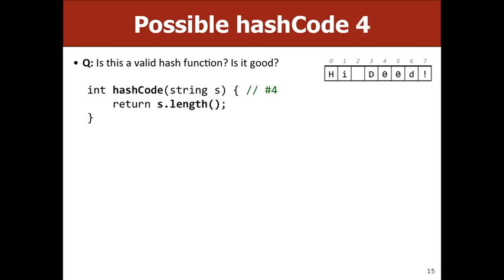What about using the length of the string? That is valid — if the string length doesn't change you get the same bucket. But is it a good hash function? It's mediocre. If we're hashing all the words in the dictionary, there aren't that many different word lengths, so even with an array of size 100 you'd never use the 99th or 100th buckets because English doesn't have words that long.